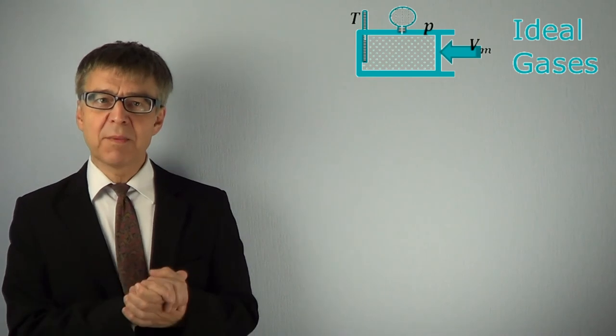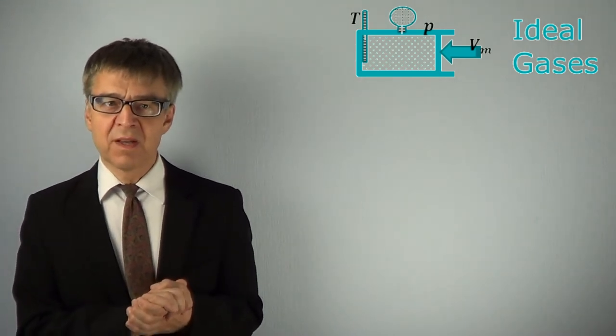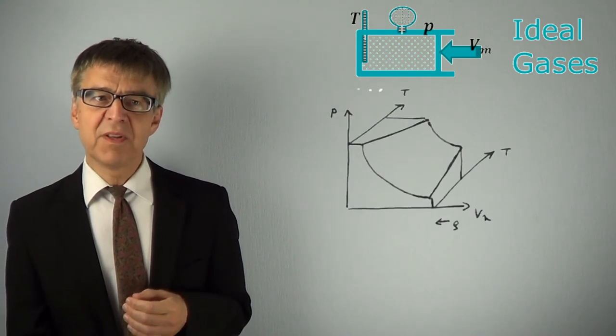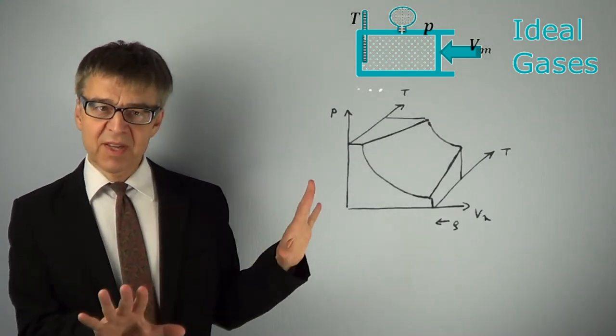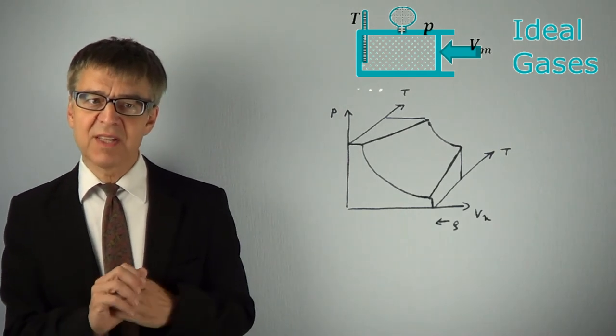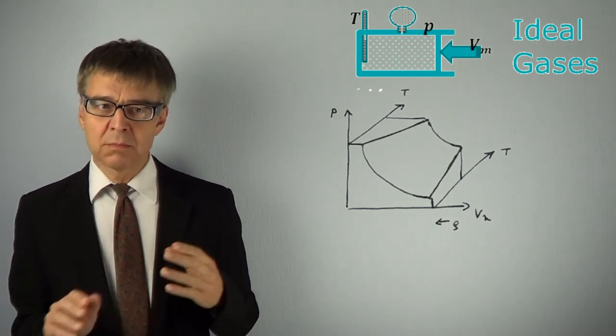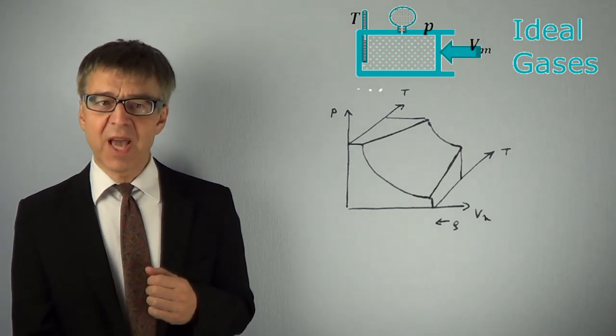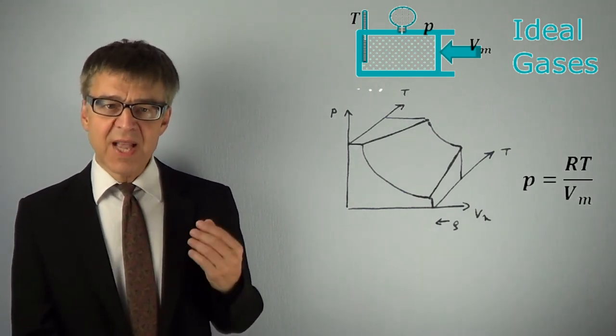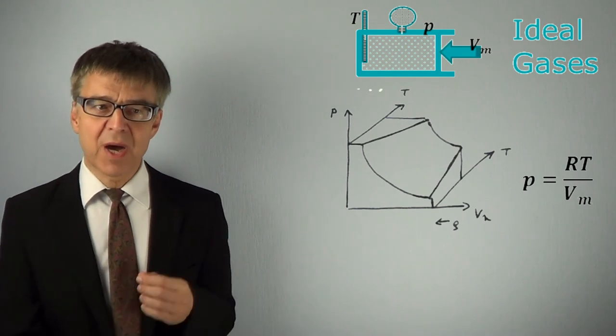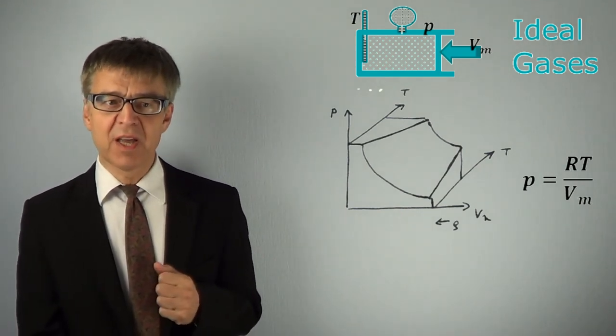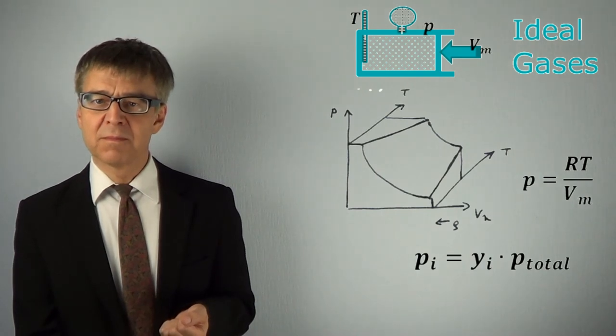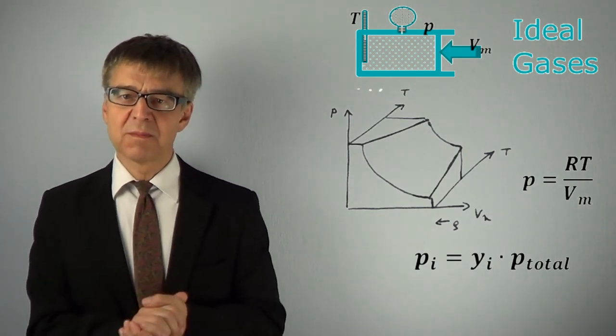Let's summarize today's lecture. The surface of state in a PVT diagram of a gas is mathematically well described by the ideal gas law. P equals RT over Vm. In gas mixtures, we may define partial pressures P sub I, which add up to the total pressure. Thanks for watching. Goodbye.